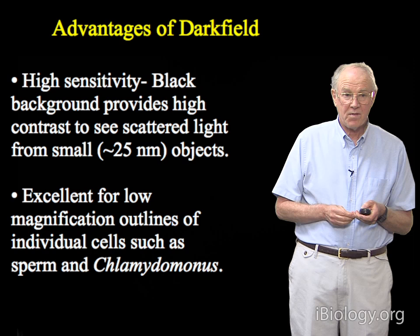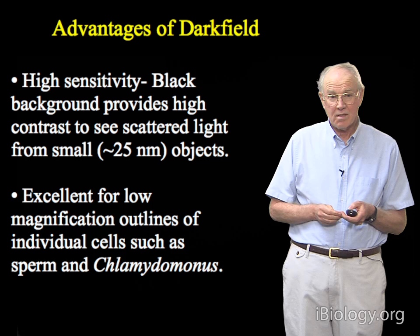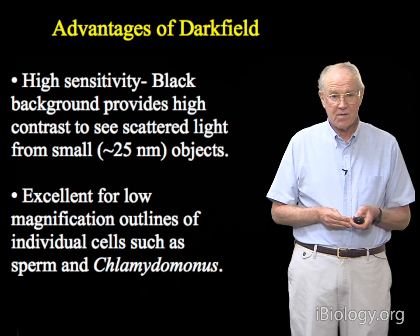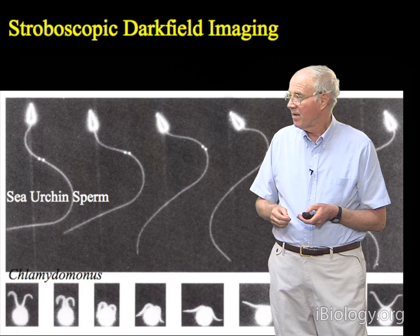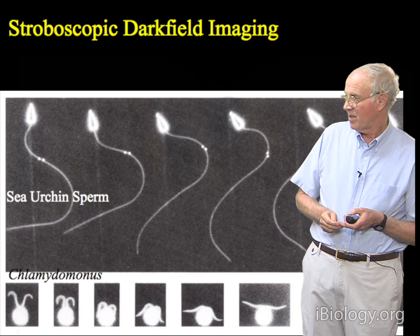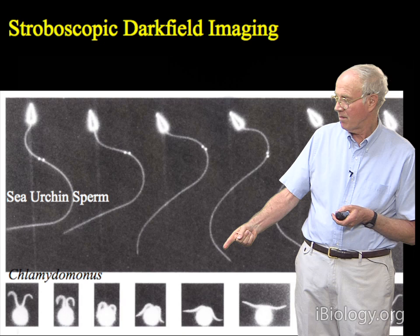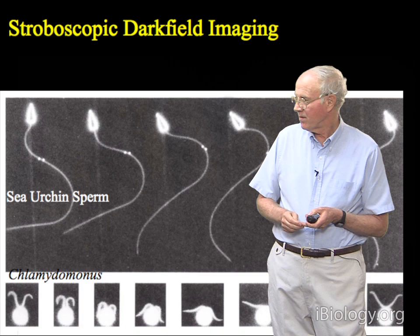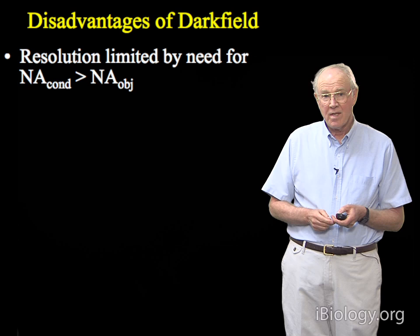The advantage of dark field is that it can provide high sensitivity, and it's possible to see scattered light from very small objects, like 25 nanometer diameter objects. It's excellent for low magnification outlines of individual cells such as sperm and chlamydomonas and other protozoa that scatter light very strongly. Here's an example of a stroboscopic dark field image from a time-lapse series for a swimming sea urchin sperm, where they've indicated one mark on the flagella during its beat pattern to analyze the beat pattern, and another time-lapse series on the beating pattern of the two flagella of chlamydomonas. Dark field microscopy has been very important for learning about the actual waveforms and beating of these organelles.